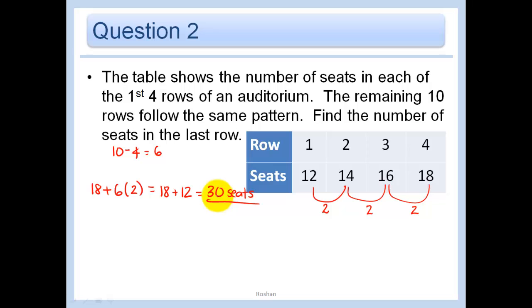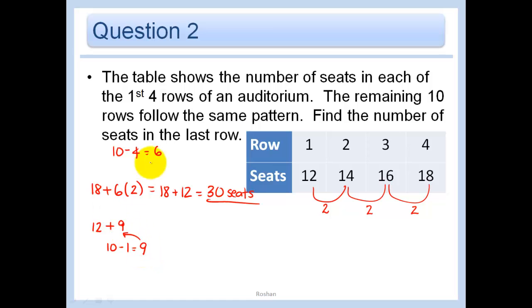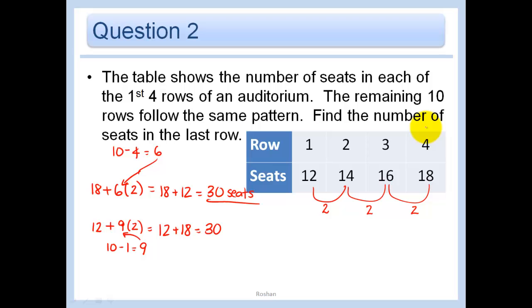What if I wanted to start at the first row — could I have figured that out starting at 12? You could have if you knew the pattern. So, 12 plus how many more rows? 9 more rows, because we started at the first one and 10 minus 1 equals 9. Let's see if we get the same answer: 12 plus 18 is 30. That just reinforced it. You could have started at any of the rows — the second one and added 8 times 2, or the third one, and so on.